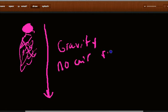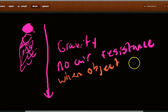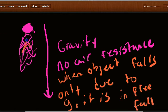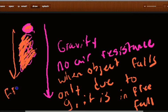No air resistance. So when an object falls only due to gravity, only due to G, it is in free fall. So since we're ignoring all this air resistance, this guy's in free fall. So straight down, free fall, because we're assuming no air resistance.